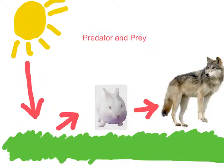This graph shows the relationship between energy and predator and prey. The grass gets its energy from the sun. When a rabbit eats the grass, it absorbs its energy and turns it into its own.